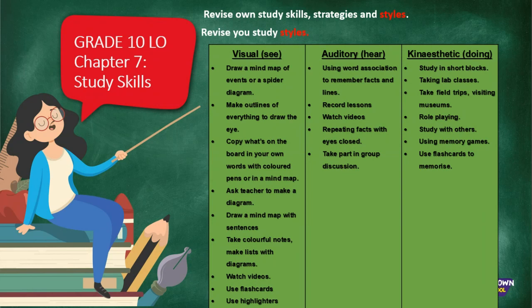Kinesthetic learners are those who learn by moving around or doing things. These learners study better by taking short breaks, attending lab classes in Life Sciences, Physical Sciences, Electrical Technology, and EGD where you do practicals. They also take field trips - for example, in Grade 12 Life Science we went to the Cradle of Humankind because we were studying evolution, and I actually understood the content better than when my teacher taught it to me in class.